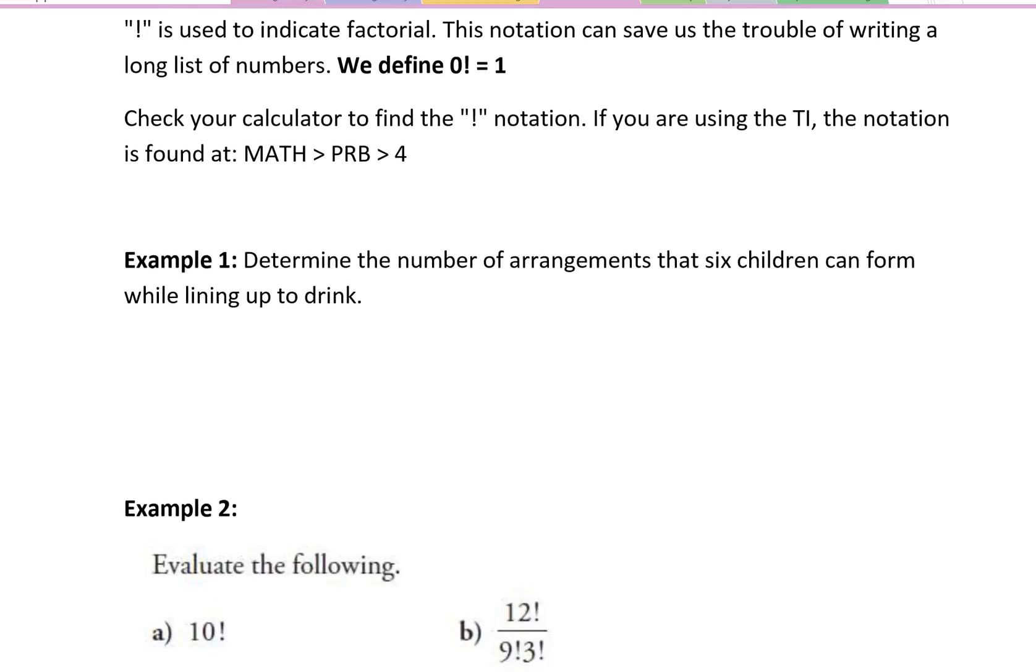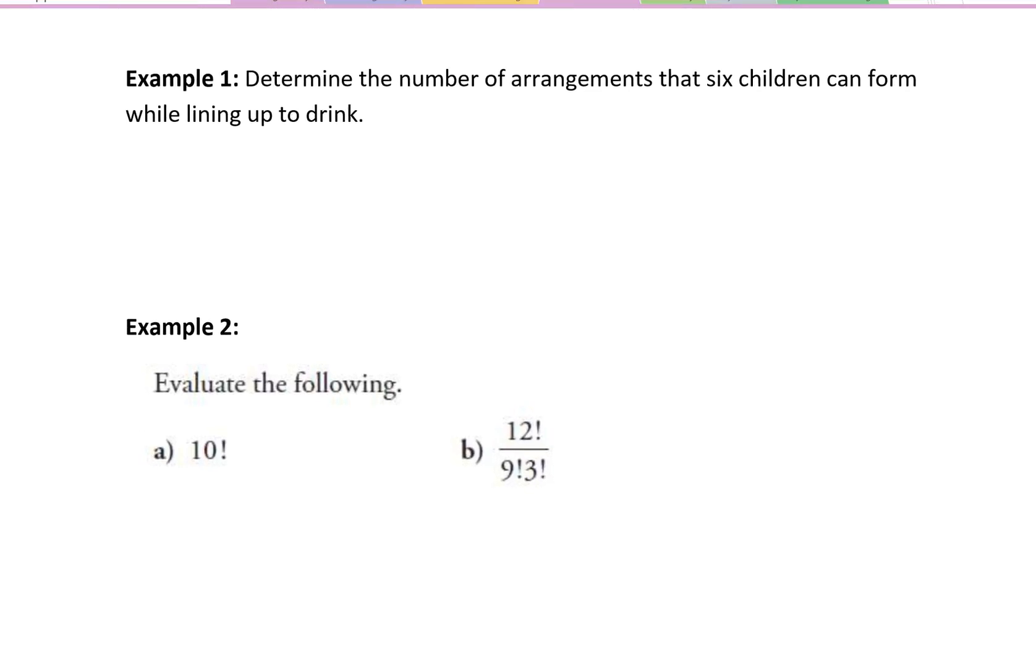That's very much like example one here. Determine the number of arrangements that 6 children can form while lining up to drink. Here's your 6, 6 different spots in line. For the first spot in line, there's 6 kids that can line up, but one of them has lined up, so there's 5 left to line up. 4 different kids, 3 different kids, 2 different kids, and then there's only one kid left. So you're multiplying those together to give you the answer. Or we could write this as 6 factorial. Either way, when you put that into your calculator, you should get 720.